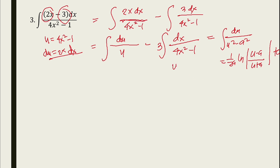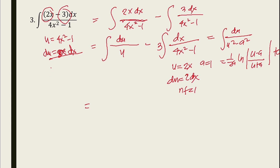For the second integral, let u equal 2x and a equal 1, so du equals 2 dx. The neutralizing factor is 1/2. The formula gives 1 over 2a times ln|(u minus a)/(u plus a)|. With a equal to 1: 1/(2 times 1) times ln|(2x minus 1)/(2x plus 1)|.